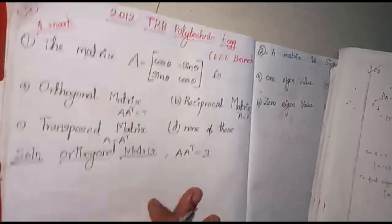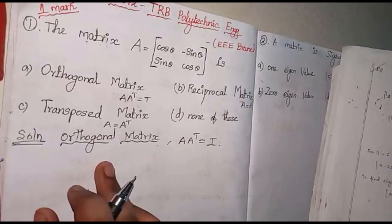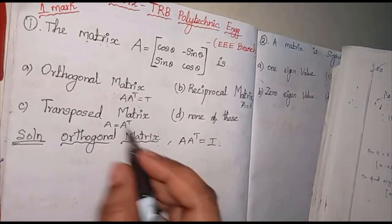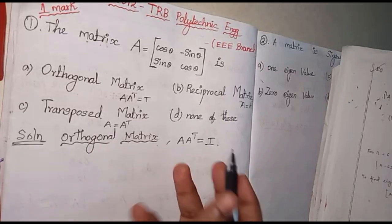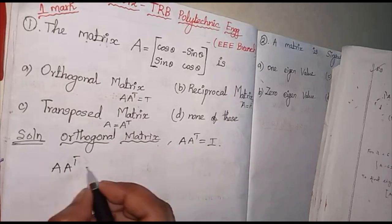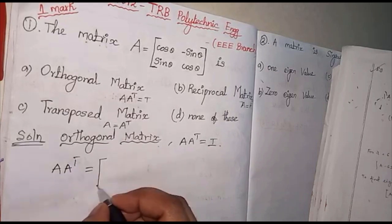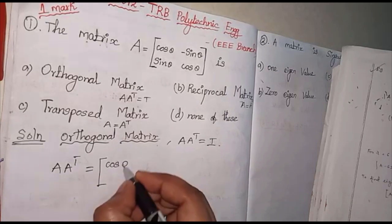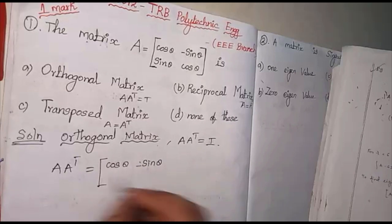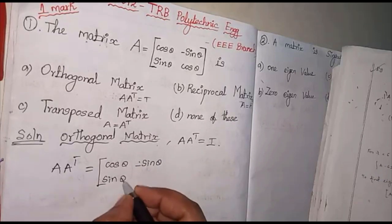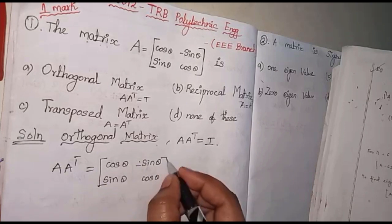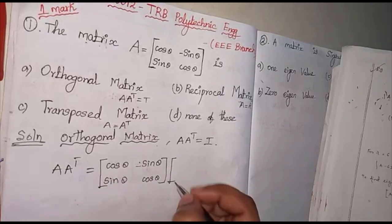Let's check the solution. First, let's check the matrix. We check A times A transpose equal to I. The matrix A contains cos theta and minus sin theta in the first row, and sin theta and cos theta in the second row. A transpose is equal to A transpose.